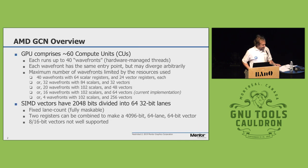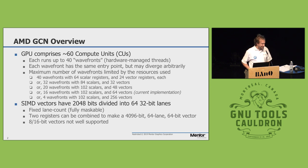AMD GCN is AMD's GPU architecture. Each GPU contains a number of compute units, on the order of 60. The most expensive cards have 64 compute units, and for those that have around 60, up to four compute units are defective after manufacturing — that's why these are consumer cards. Each of these compute units can run up to 40 wavefronts. In AMD terminology, that would correspond to an Nvidia warp if you're familiar with that, or in OpenACC that would map to a worker, or in OpenMP a thread.